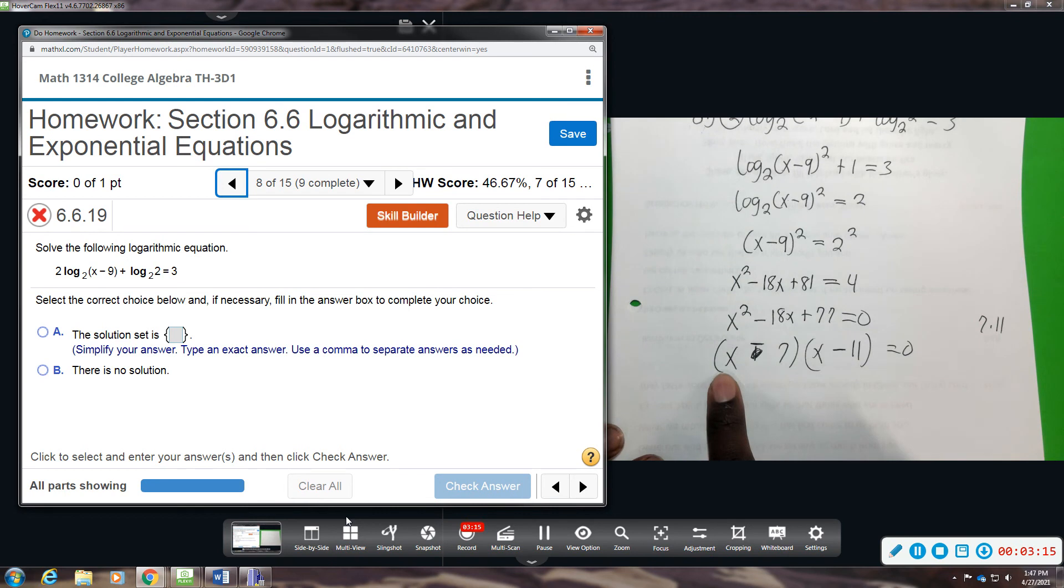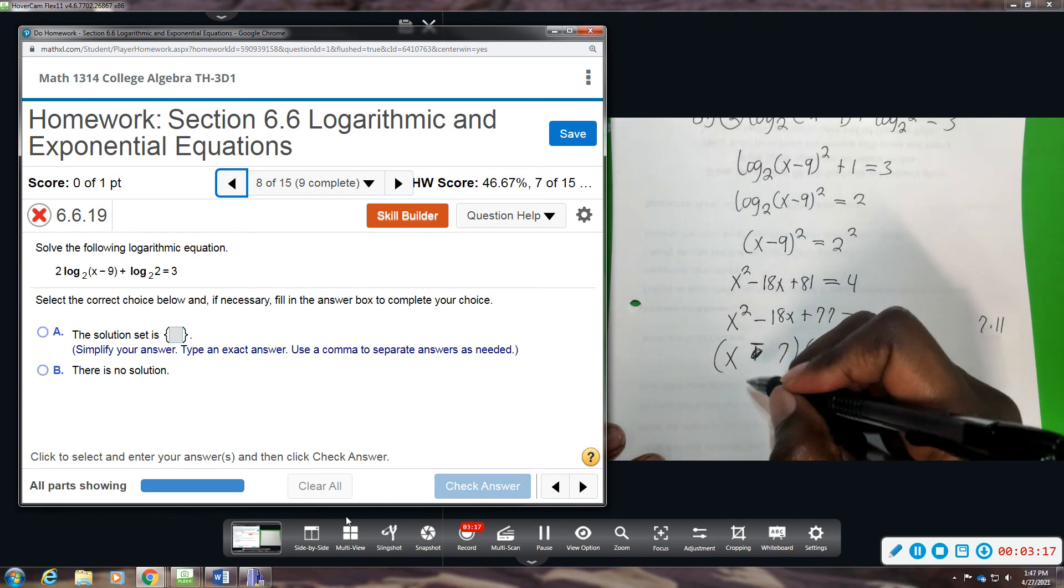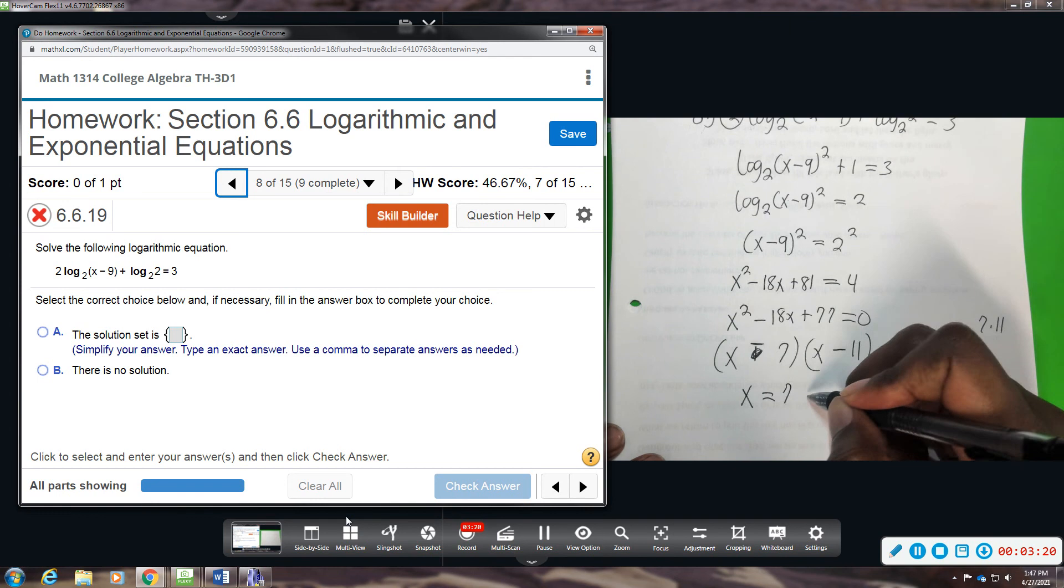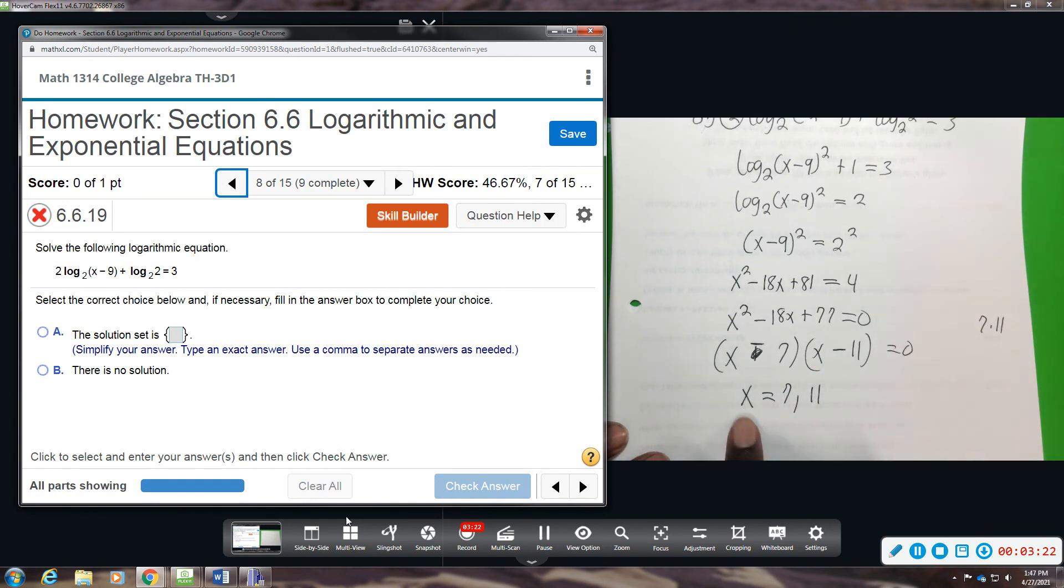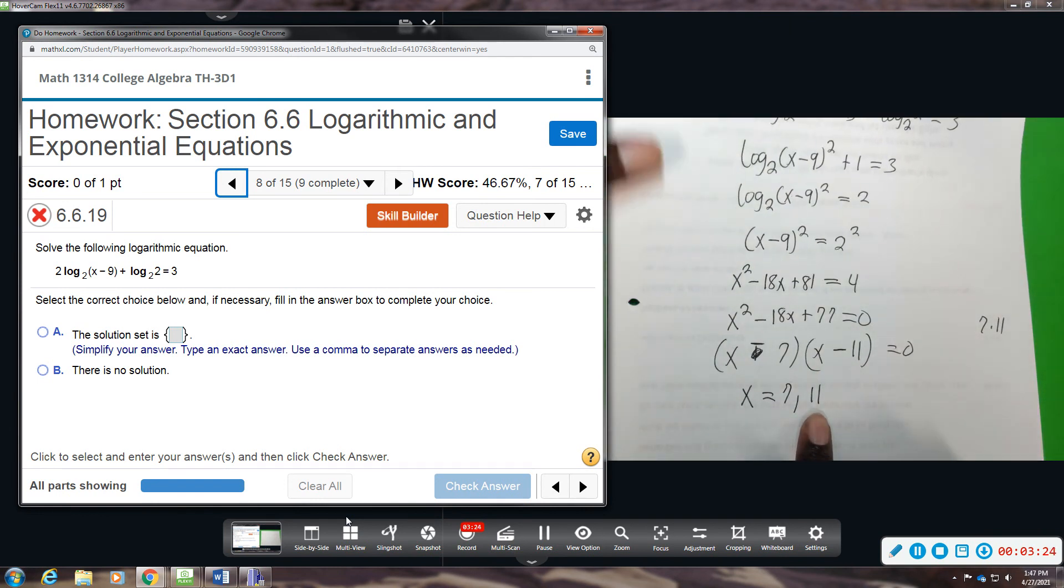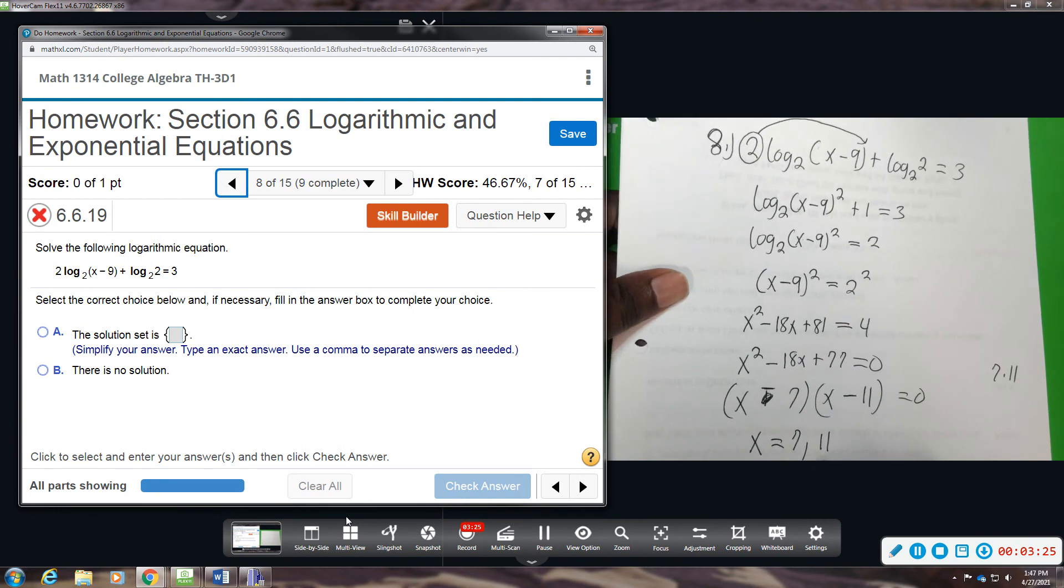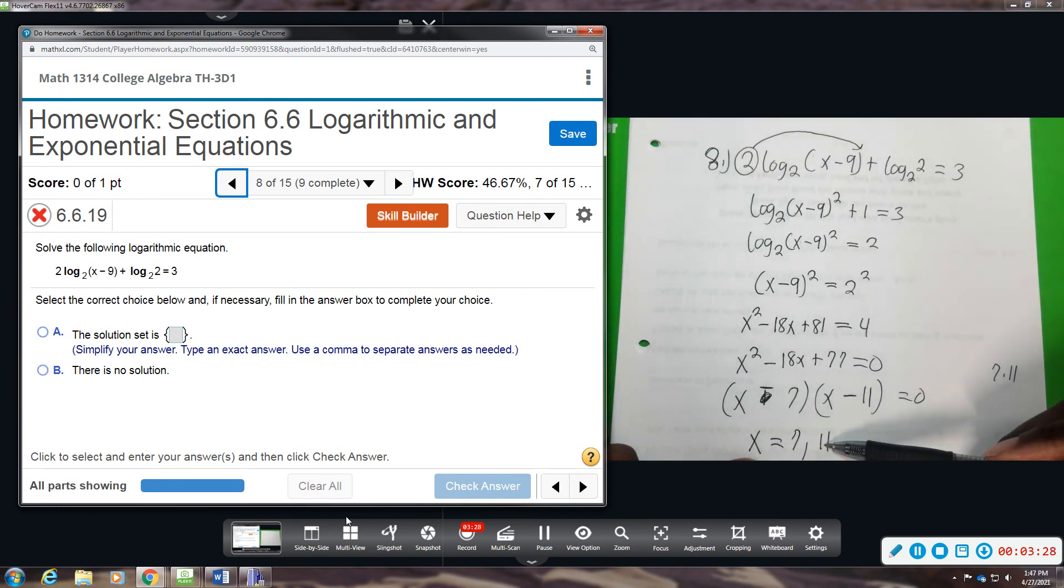All right, from here we solve and set each factor equal to 0. So we will get x equals 7 and 11. So we have two possible answers. But before you confirm them, you need to go back to the beginning and make sure they both work.